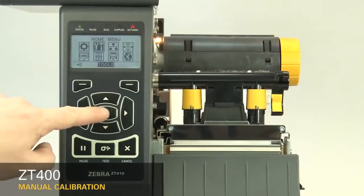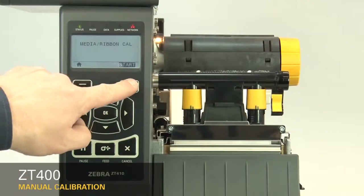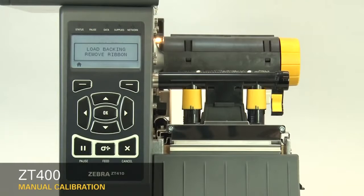After you have the sensor properly located, select Media Ribbon Calibration in the menu. Press the right select button under the display to start. Be careful not to press the button more than once.